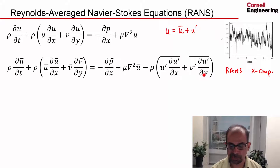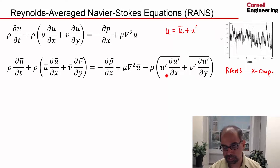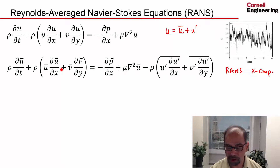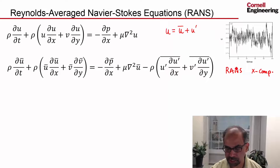But then we get this extra term that involves the product of two fluctuations — for instance, the u-velocity fluctuation and the derivative of that. This is not zero. You have products of fluctuating quantities and then you average that. This term comes from the nonlinear convective term, so the fluctuating terms don't drop out on averaging. I've just brought it to the right-hand side. This is the extra term one gets when doing the Reynolds average, so it's contained in the Reynolds averaged Navier-Stokes equations.